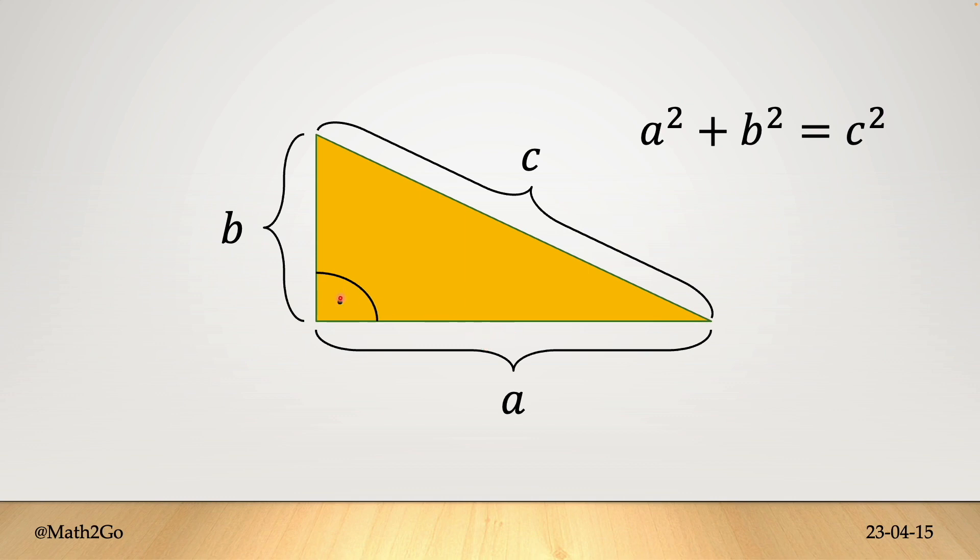The statement holds for right triangles, meaning we have 90 degrees in one corner. The statement says for both sides which are connected to this right angle, a and b here in this picture, when taking squares and adding them, we are getting c², where c is the opposite side of the right angle, the hypotenuse.